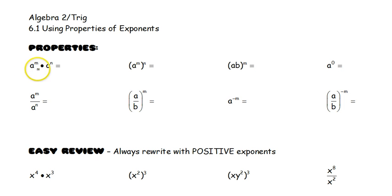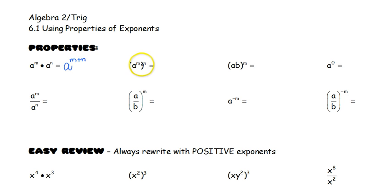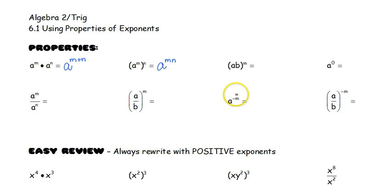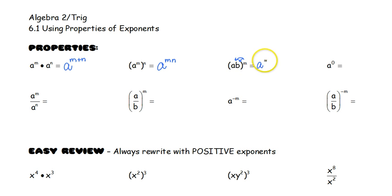When you are multiplying bases that are the same, you are going to add those exponents — so this is a raised to the m plus n. If we have one base raised to a power raised to another power, a power to a power, you are going to multiply the exponents. When you have a group raised to a power and inside that group is all multiplication, you are going to distribute that exponent and multiply — so that's a to the m times b to the m.